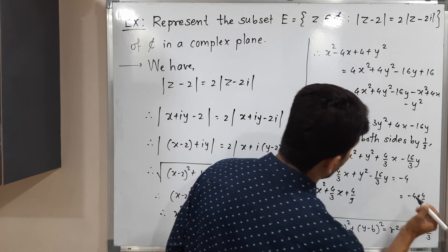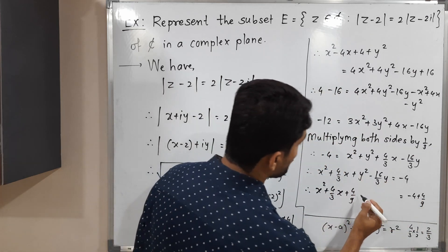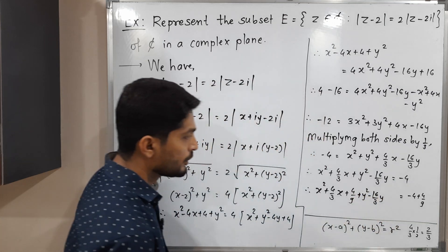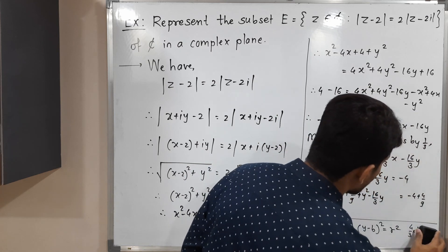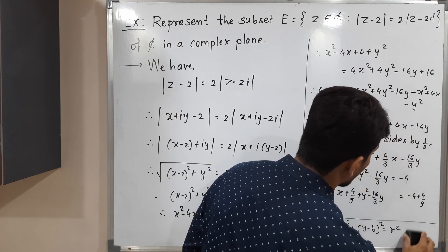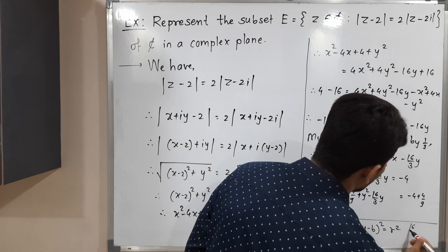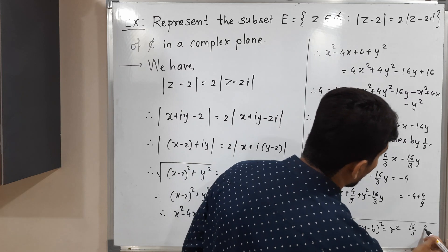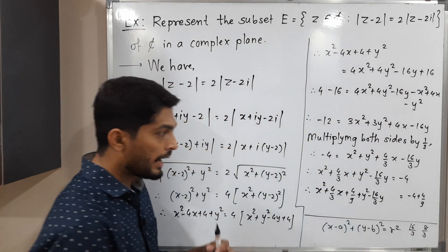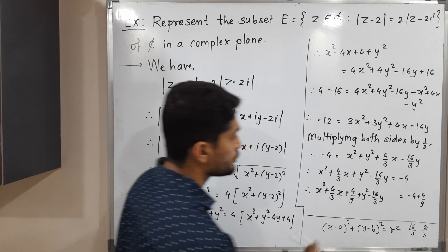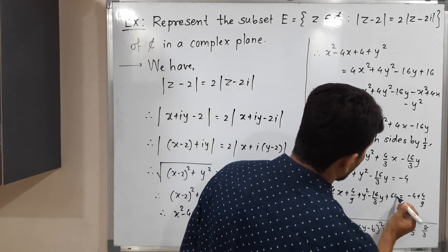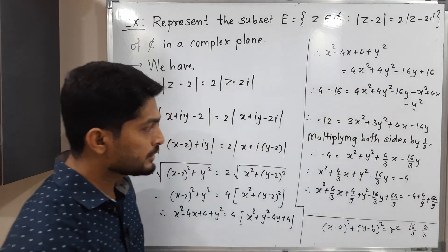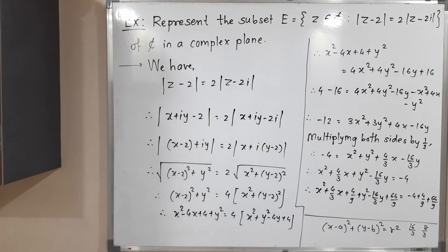For the Y terms: Y squared minus 16/3 Y — the coefficient of Y is 16/3, its half is 8/3, and its square is 64/9. So we add 64/9 to both sides as well. The right side now has minus 4 plus 4/9 plus 64/9.